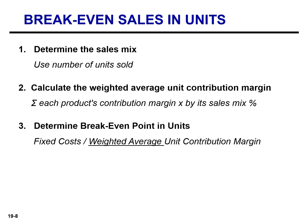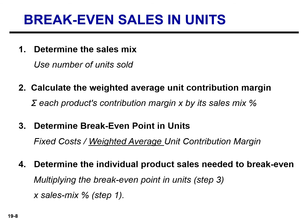Step three: determine the break-even point in units. The formula is very similar to the single-product formula from the previous chapter, except that we divide fixed costs by the weighted average unit contribution margin. Step four: determine the individual product sales needed to break even. Take the total break-even units from step three and multiply by each product's sales mix percentage from step one to determine how many units of each product must be sold for the company to break even.